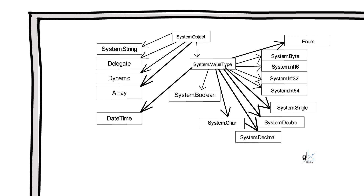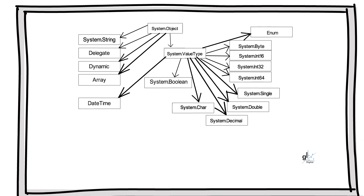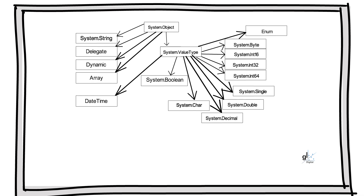Here's a hierarchical representation of data types in C-sharp. Note that the System.String data type inherits directly from the System.Object class. All string objects are derived from the System.String class.